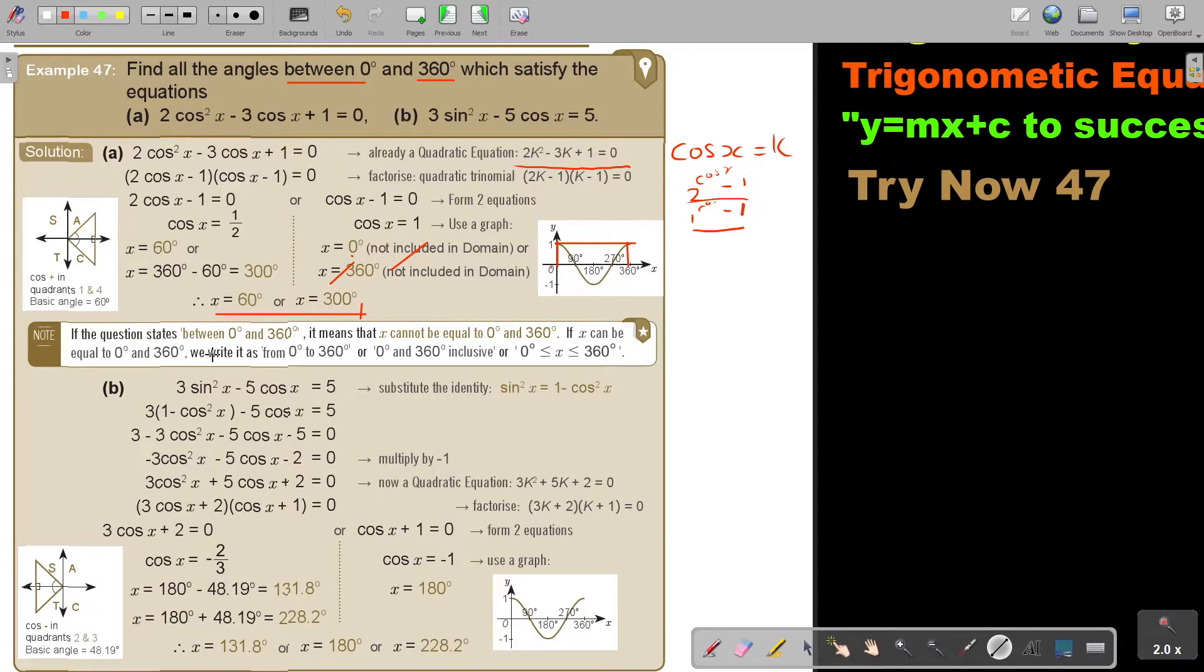If the question states between 0 and 360, it means that x cannot be equal to 0 or 360. If x can be equal to 0 or 360, we write it as from 0 to 360, not between. Don't let them cut you out on that kind of things. Then let's look at the next one.